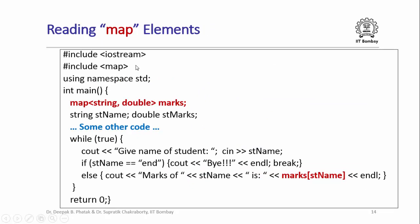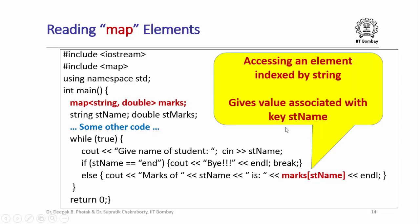We have seen how to write elements in a map. Reading elements from a map is done the same way. Here I have a program where I take the student's name from the user and instead of writing marks I read out the marks indexed by the student's name: marks[st_name]. If the map already contained a key-value pair where the key matched st_name, this gives the associated value.